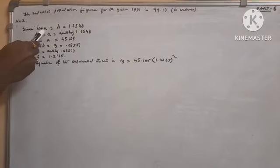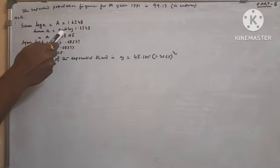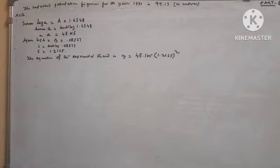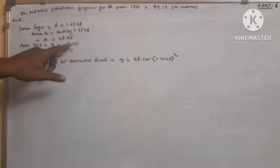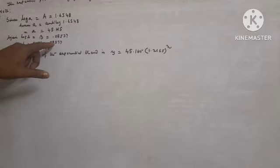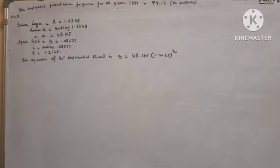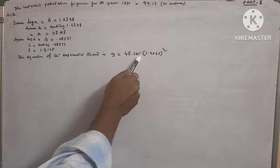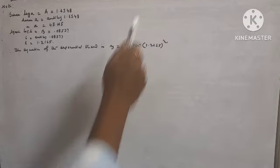Note: Since log a = A = 1.6548, hence a = anti-log(1.6548) = 45.165. Again, log b = B = 0.08537, so b = anti-log(0.08537) = 1.2165. Therefore, the equation of the exponential trend is y = 45.165 × (1.2165)ˣ.